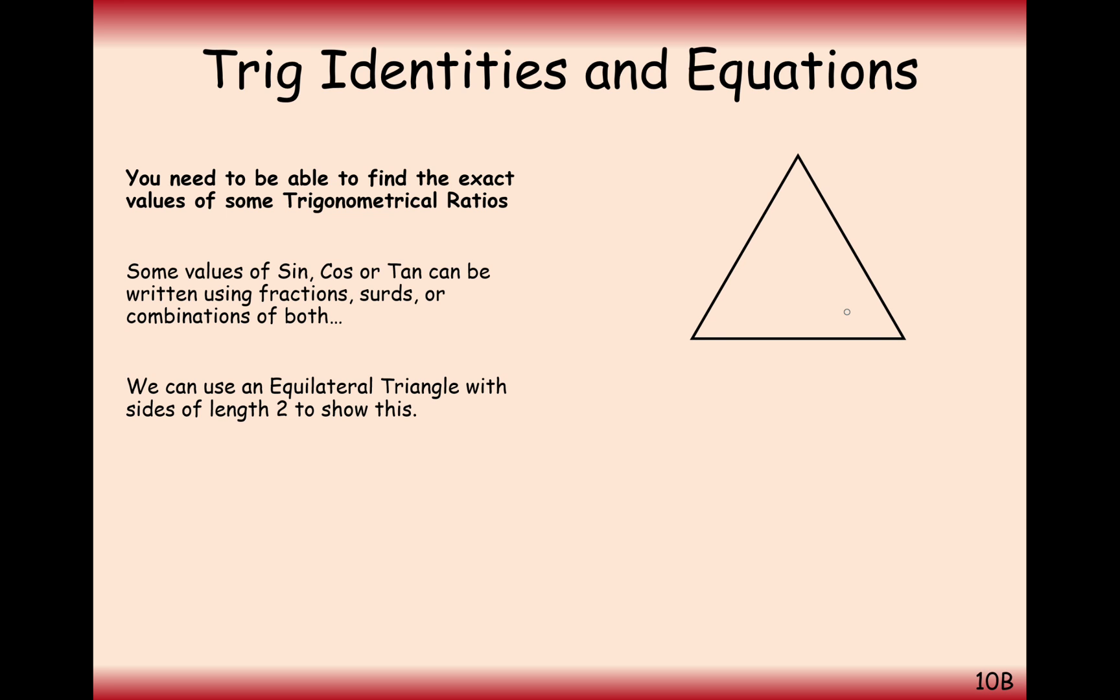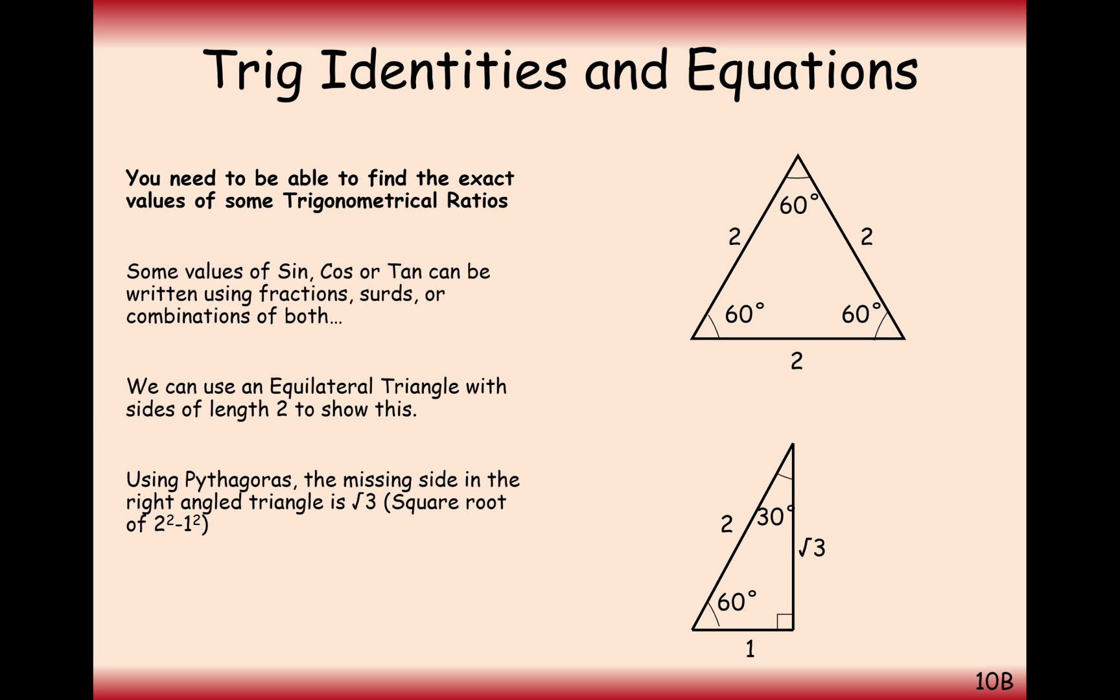The first magic triangle looks like this. It has 60 degrees in all the sides, 2 on the lengths, and we cut it in half. So we get 30 degrees at the top now, 2 on the hypotenuse, 1 on the bottom, and it's therefore going to be root 3 on the height.